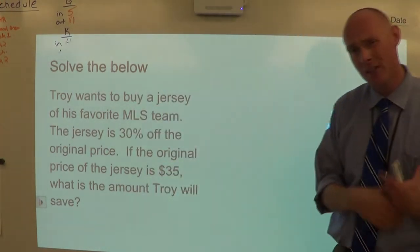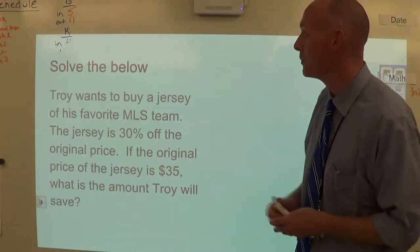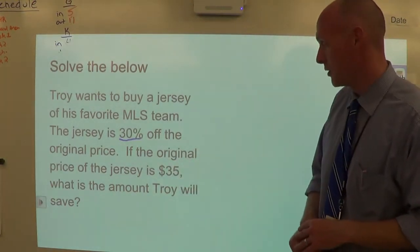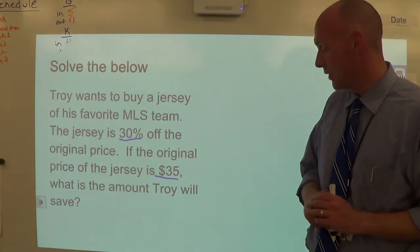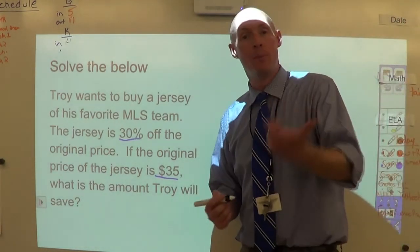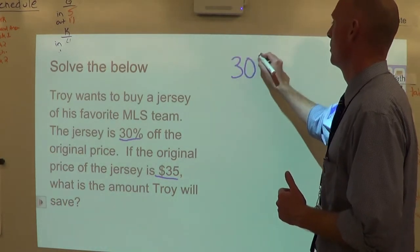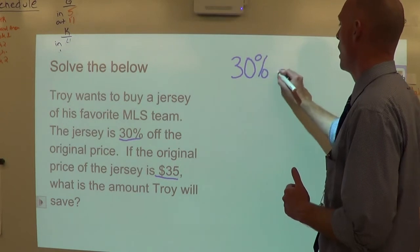So again, here's a typical word problem that you might see where we're going to have to extract the information we need. Troy wants to buy a jersey of his favorite major league soccer team. The jersey is thirty percent off the original price. If the original price of the jersey is thirty five dollars, what is the amount Troy will save?